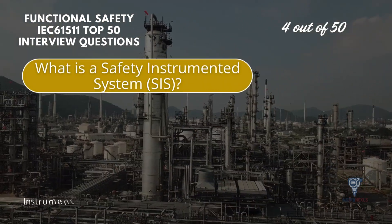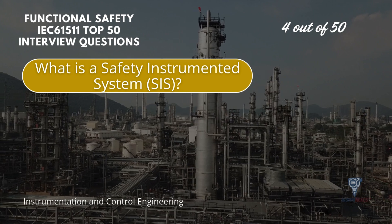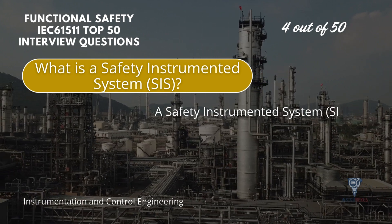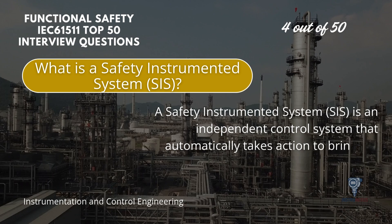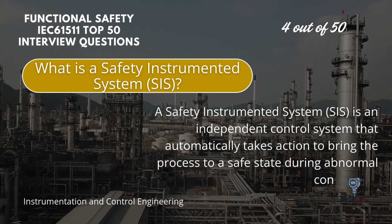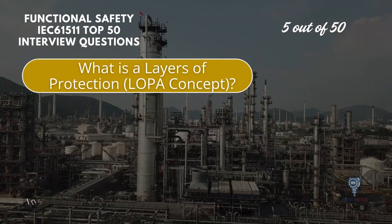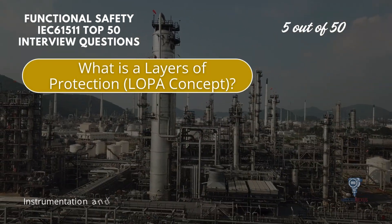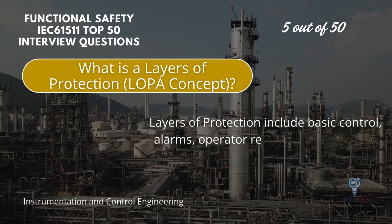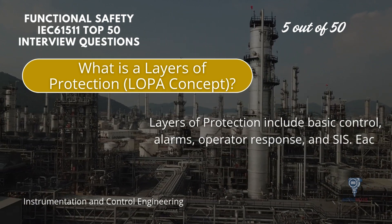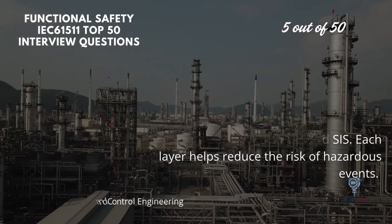What is a safety instrumented system? A safety instrumented system, or SIS, is an independent control system that automatically takes action to bring the process to a safe state during abnormal conditions. Layers of protection include basic control, alarms, operator response, and SIS. Each layer helps reduce the risk of hazardous events.